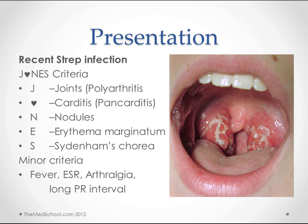The minor criteria are fever, an elevated sed rate, arthralgias, and a prolonged PR interval. One thing to be careful with is that arthralgia is not equivalent to the polyarthritis. So on a test question, you might see an arthralgia and mistake it for being a major criterion.